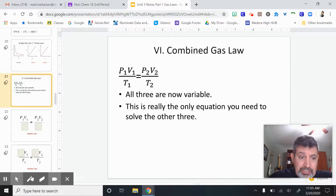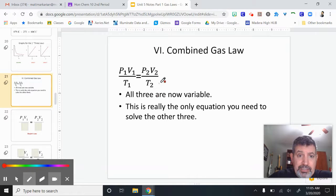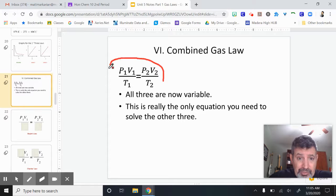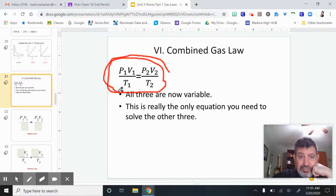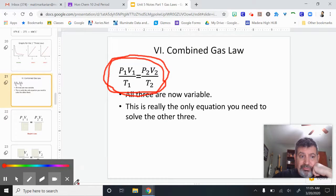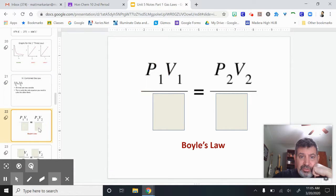The combined gas law has all three variables that we've discussed so far: pressure, volume, and temperature. They're all now variable, so they can all change. This equation is the only one you really need to solve the other three. In normal circumstances on a test, the equation sheet would just have this equation. Let me show you what I mean by that and how we can actually do this.